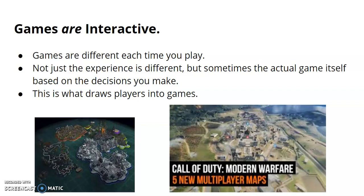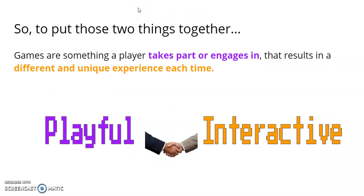If you've ever played a game like Among Us, Fortnite, or Modern Warfare, you also know that you can play the same game many different times and still have a different experience each time. So putting those two things together, a game occurs when playful meets interactive. The working definition is: games are something a player takes part or engages in that results in a different and unique experience each time.